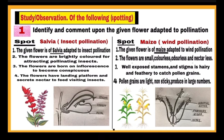So after writing these four points, draw the diagram and label the important points as shown. Second spot is the maize flower. It can also be given as original flower or in the form of a chart. Point one: the given flower is of maize adapted to wind pollination. Point two: flowers are small, colorless, odorless, and nectarless. Point three: the stamens are well exposed and the stigma is hairy and feathery so that pollen grains can be caught. Point four: pollen grains are light, non-sticky, and produced in large numbers. After writing these four points, draw the diagram with pencil and label the important parts.